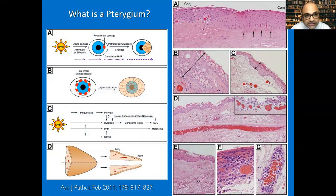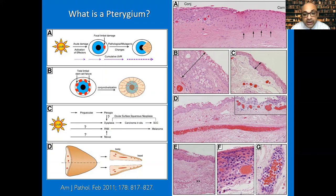There is broad consensus that pterygium is a sub-epithelial degeneration of the conjunctiva, meaning the epithelium overlying the pterygium is more or less normal — it's not pathological, unlike ocular surface squamous neoplasia (OSSN), which is essentially an epithelial neoplasia or dysplasia. In pterygium, all the pathology is sub-epithelial, so the epithelium overlying it — whether corneal or conjunctival — is normal. Most of the pathology is restricted to the sub-epithelial substantia propria, and the pathognomonic sign in primary pterygium is elastotic degeneration.